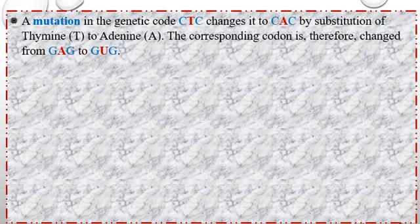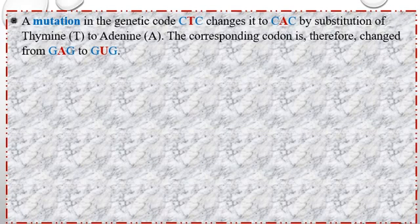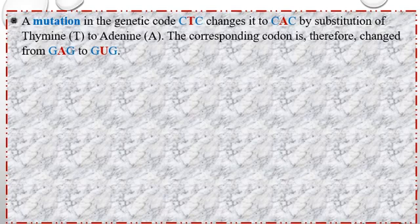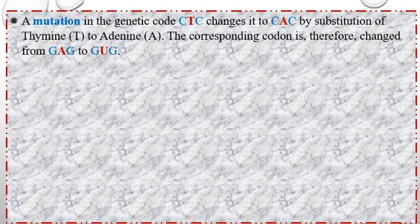A mutation in the genetic code CTC changes it to CAC by substitution of thymine with adenine. So in the beta chain of hemoglobin, at the 6th position, the amino acid is glutamic acid, coded by CTC. By mutation, CTC becomes CAC, meaning thymine is substituted by adenine. The mRNA codon changes from GAG to GUG.